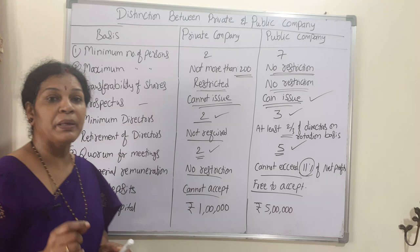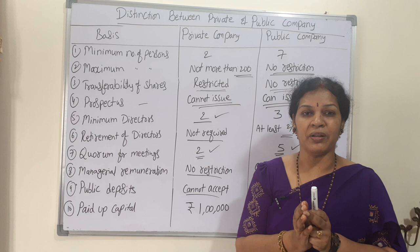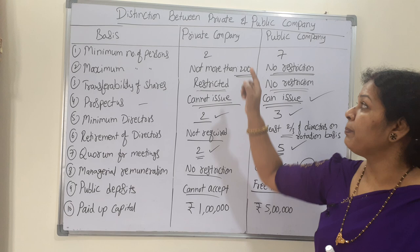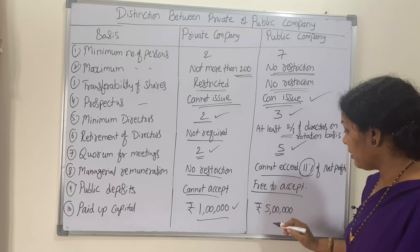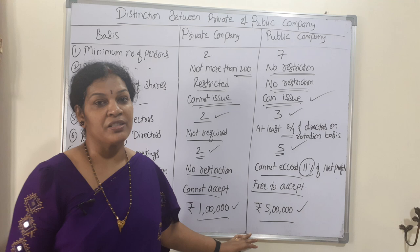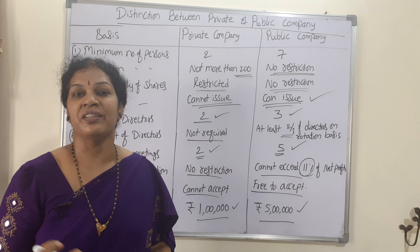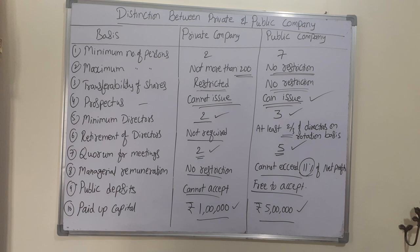Next is paid-up capital — the minimum amount required to start a company. For a private company, the minimum paid-up capital is one lakh rupees. For a public company, the minimum is five lakh rupees. Only when these minimum amounts are met can the respective companies be started.